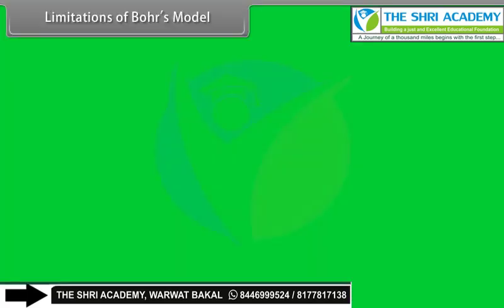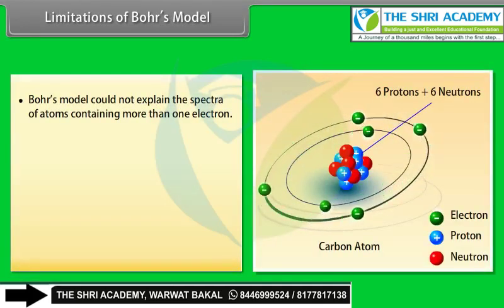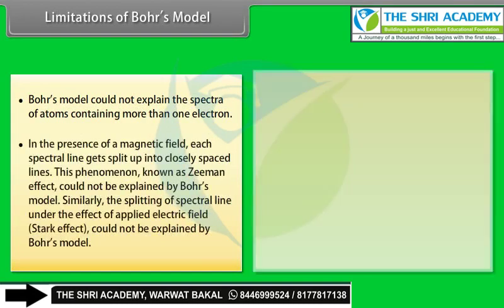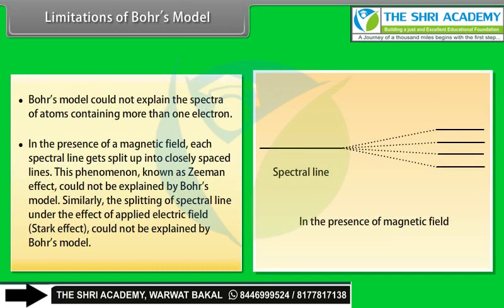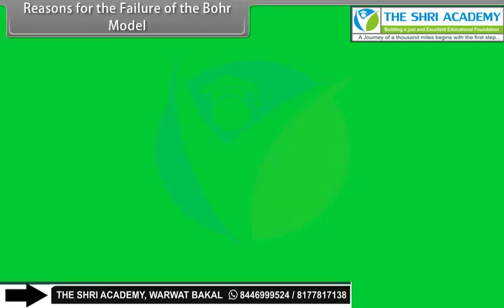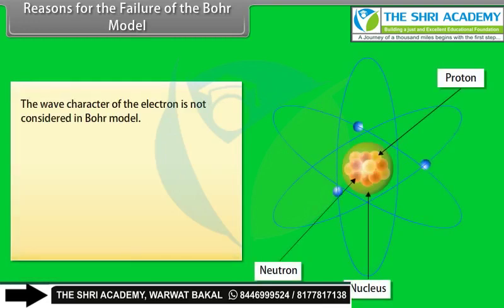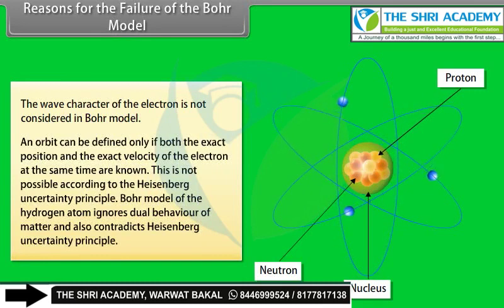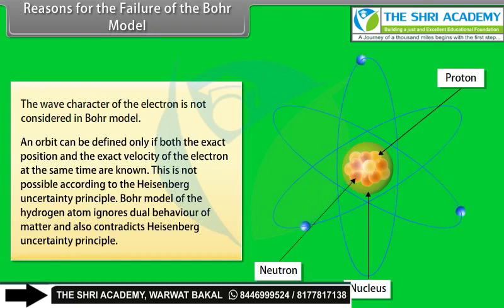Limitations of Bohr's model: (1) It could not explain the spectra of atoms containing more than one electron. (2) In the presence of a magnetic field, each spectral line splits into closely spaced lines — the Zeeman effect — which Bohr's model could not explain. Similarly, splitting under an electric field — the Stark effect — could not be explained. Reasons for failure: The wave character of the electron is not considered. Defining an orbit requires knowing exact position and velocity simultaneously, which is impossible according to the Heisenberg uncertainty principle. Bohr's model ignores the dual behavior of matter.